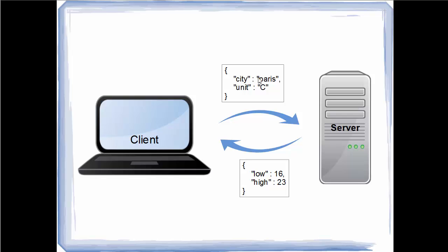A simple JSON uses curly brackets, and values are defined as key-value pairs. For example, the key is "city" and the value is "Paris". The key "unit" has the value "C" for centigrade. When the server sends temperature data, "low" is a key with value 16, and "high" is a key with value 23. This is the format of a very simple JSON sent between client and server.